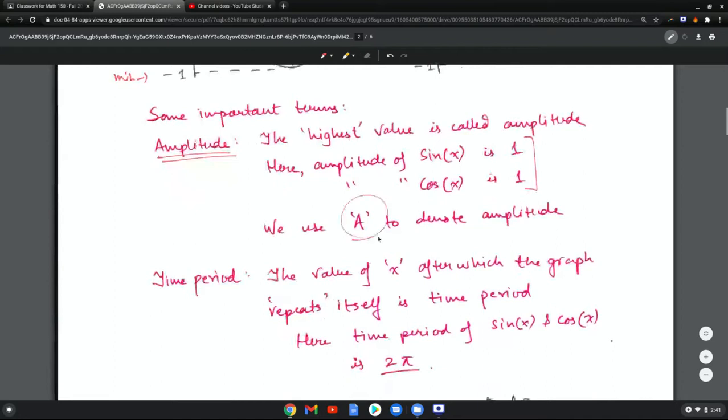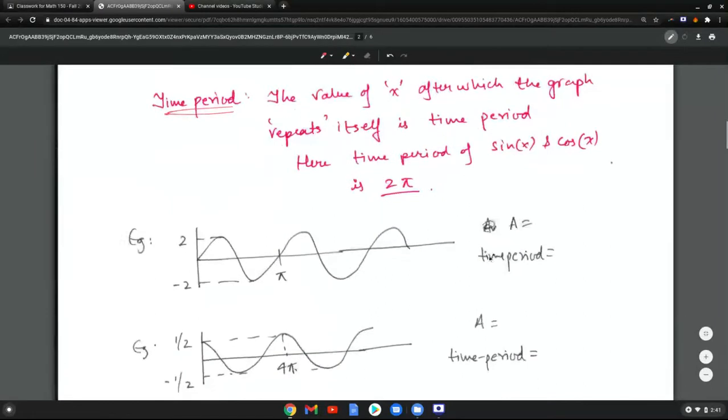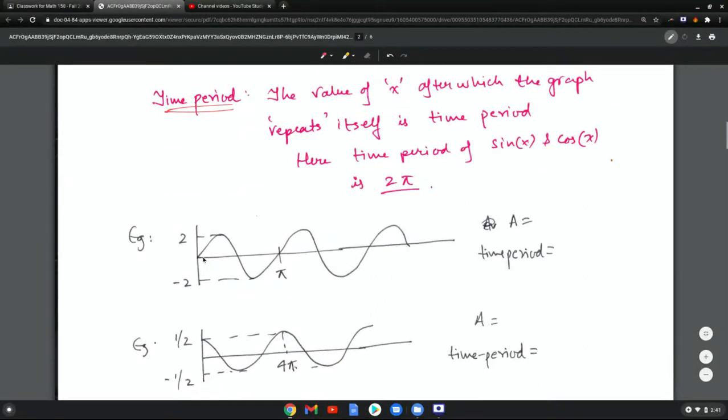The next thing is time period. That's the value of x after which the graph repeats itself, and here it is 2 pi. What this means is, for example, here if you look at this graph, if you follow it, then after this point it's a repetition, right? This means that wherever it repeats, that's your time period.